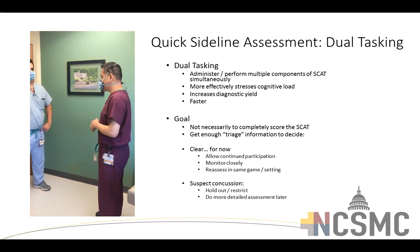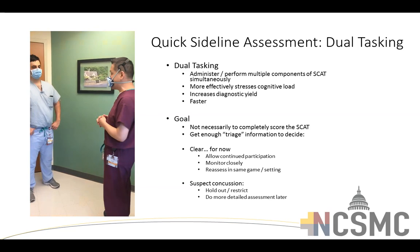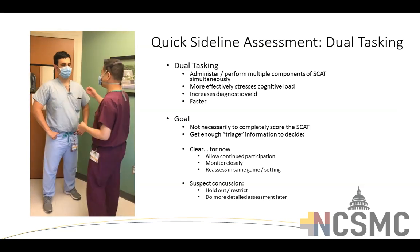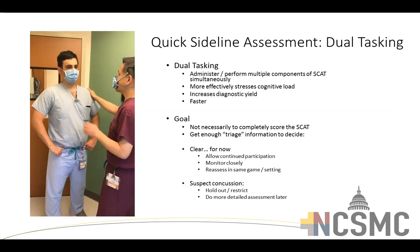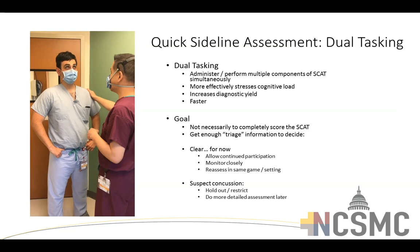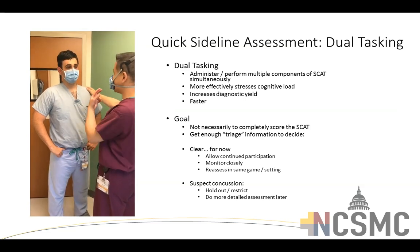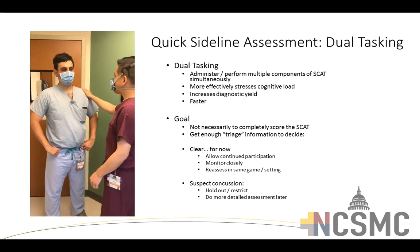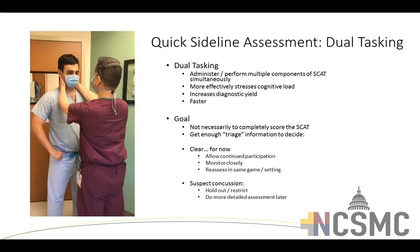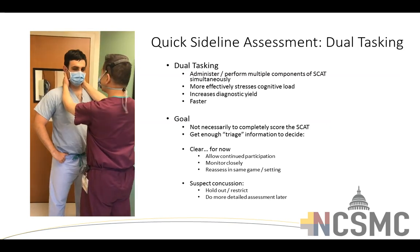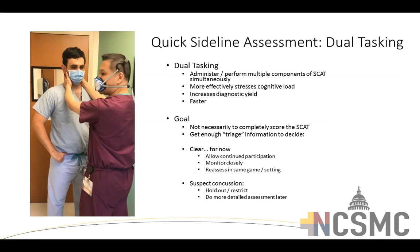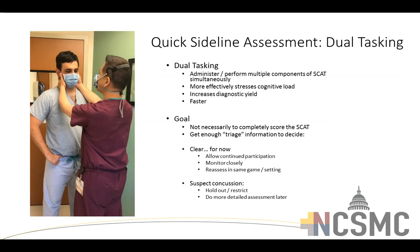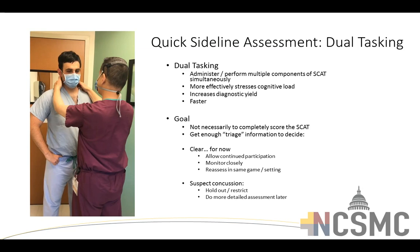Here's a quick demo of getting through SCAT 5 components efficiently using dual tasking. Approach the athlete: 'How are you feeling? That was a pretty big hit.' Assess their gaze and eye contact while taking history. Ask about headache or dizziness while simultaneously palpating the neck midline — clearing the C-spine for tenderness and range of motion. Check flexion, extension, lateral rotation, and lateral flexion simultaneously while asking orientation questions.